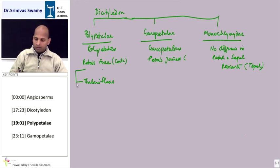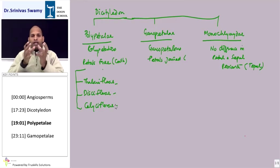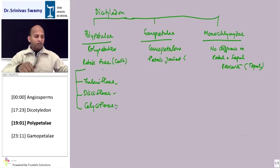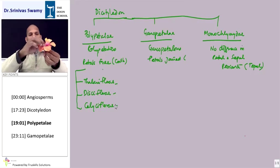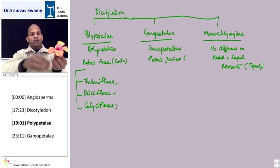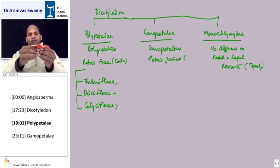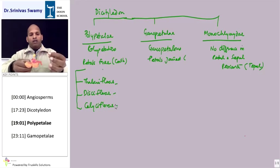The other one is Disciflorae and the third one is Calciflorae. What does this mean? It means that the thalamus of the flower... let me just take this out for your understanding. What is called a thalamus? If I take this, you can look at one of these flowers that has fallen here.